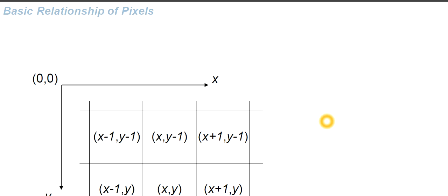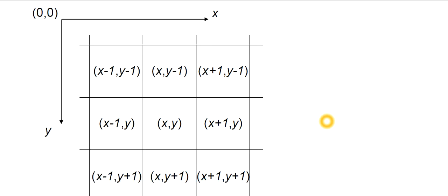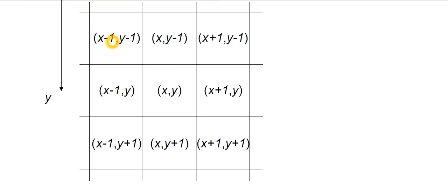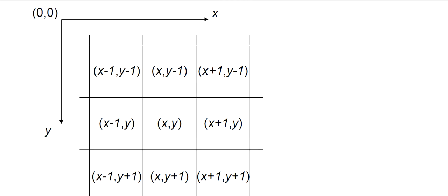Basic relations of pixels. Look at this diagram carefully. This is the x-axis and this is the y-axis. We have this point starting from x-1, y-1. As we move along the x-axis, the x values will be increased: x-1, then x, then x plus 1. Similarly, when we move downwards along the y-axis, the y values will be increased.